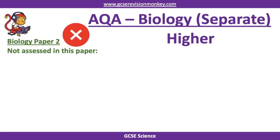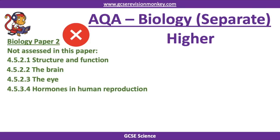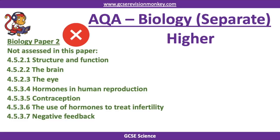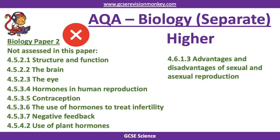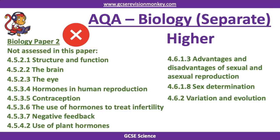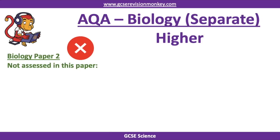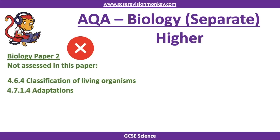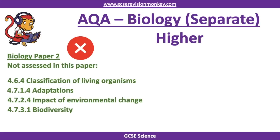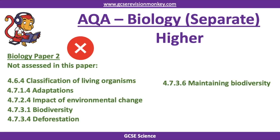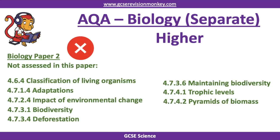First of all let's go through the topics that they've told you won't be assessed in this paper - and there's a lot of them, it actually goes on to two slides. These are: structure and function, the brain, the eye, hormones in human reproduction, contraception, the use of hormones to treat infertility, negative feedback, use of plant hormones, advantages and disadvantages of sexual and asexual reproduction, sex determination, variation and evolution, the development of understanding of genetics and evolution, classification of living organisms, adaptations, impact of environmental change, biodiversity, deforestation, maintaining biodiversity, trophic levels, pyramids of biomass, sustainable fisheries and role of biotechnology.